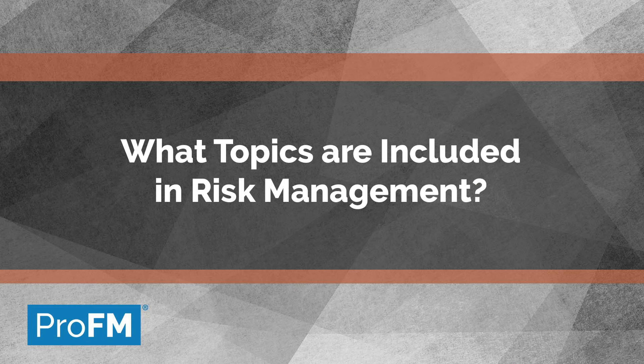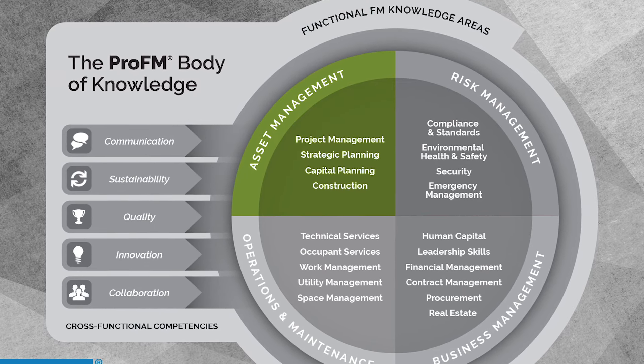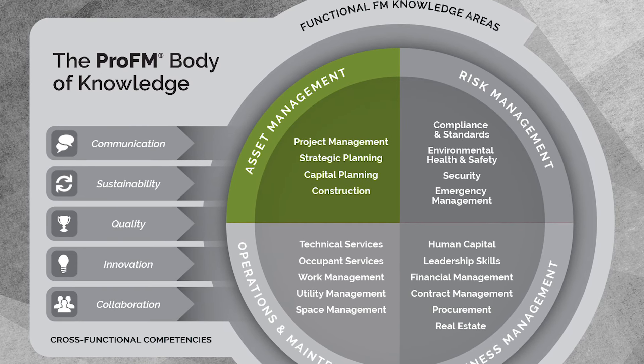It's important for facility managers to understand all the different parts of asset management. Specifically in this module, you have project management, strategic planning, capital planning, and construction. It really starts with strategic planning — both for the parent organization and from an FM perspective — in terms of how your facilities strategy ties into the parent organization's strategy. After that, you determine how to program your capital for physical assets in future years, then move into construction and project management. The last piece cuts into operations and maintenance and risk management.